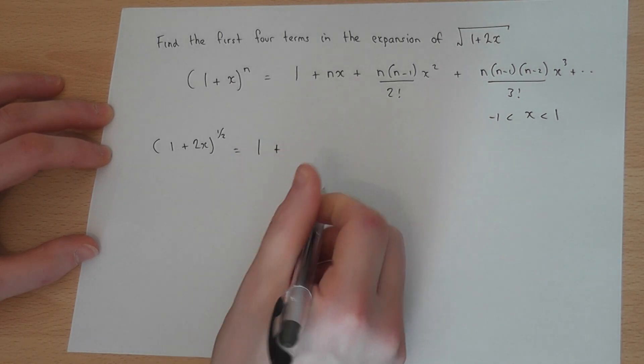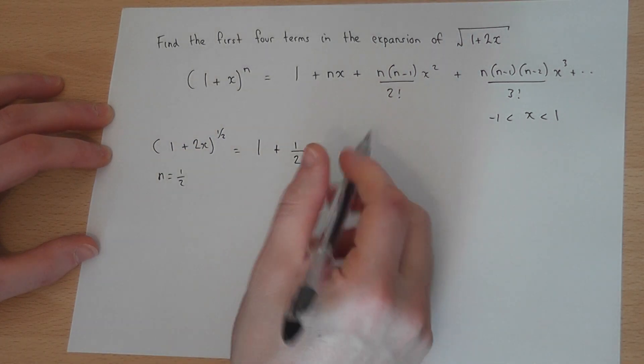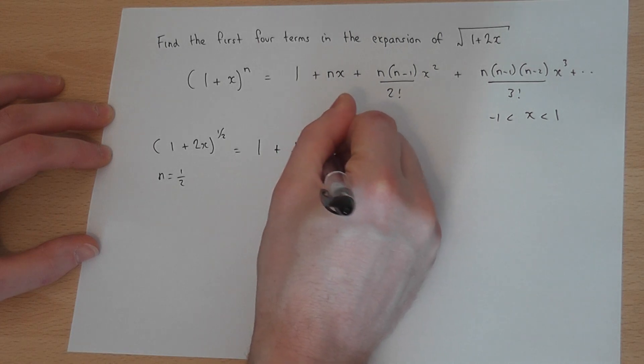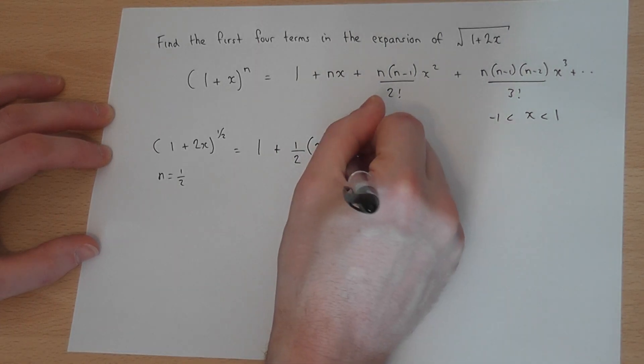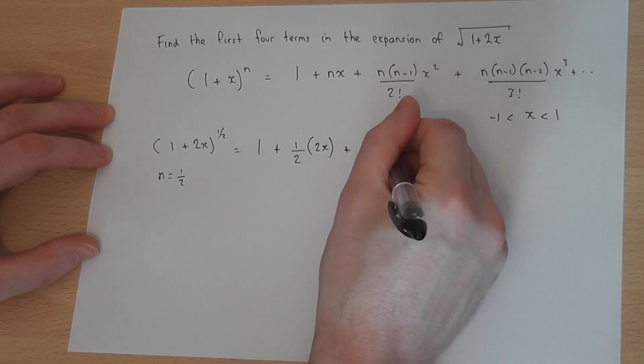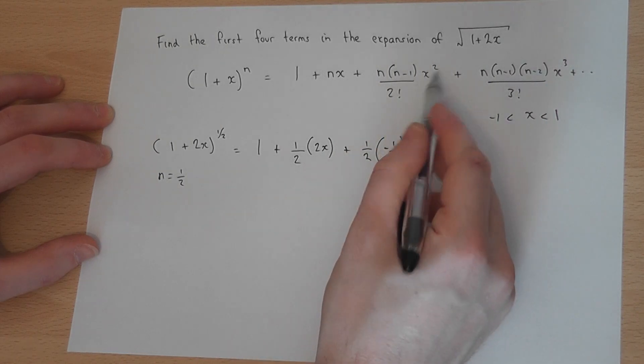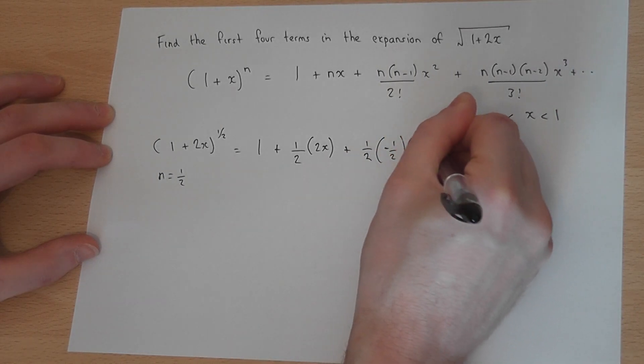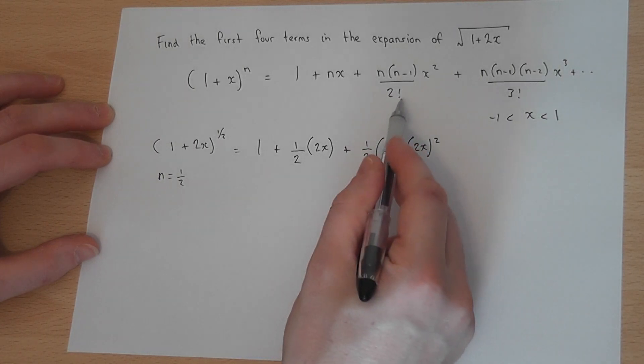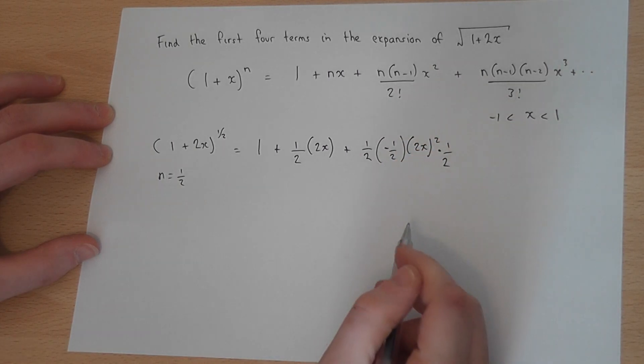1 plus, now n equals a half, so therefore a half, but rather than x, I've got a 2x. So it's a half times 2x. Then, n is a half, a half take away 1 is minus a half. It's not x, it's 2x, so it's 2x all squared. And it's all over 2 factorial, which is 1 over 2. So it's basically times by a half.